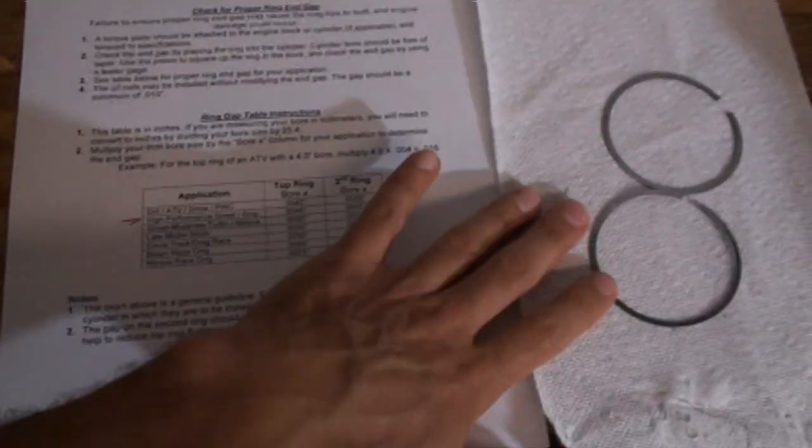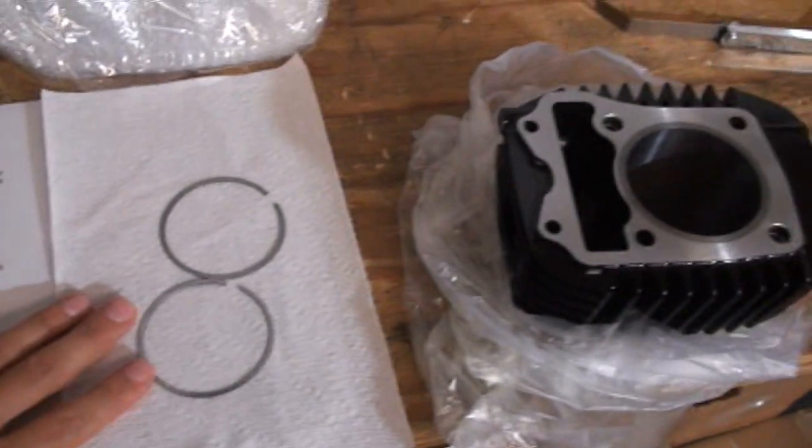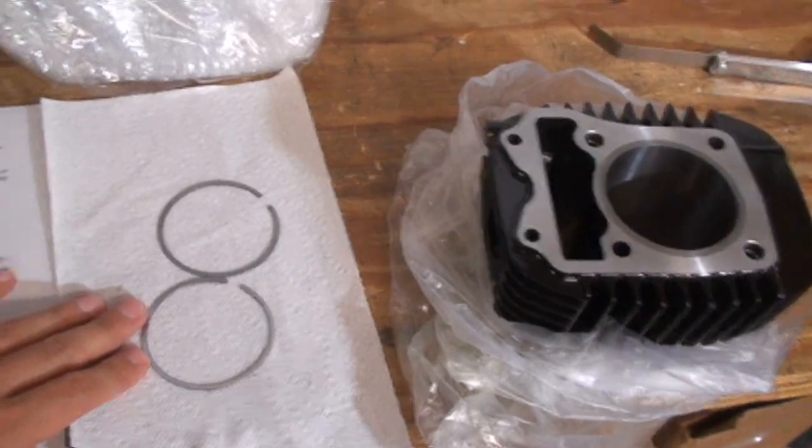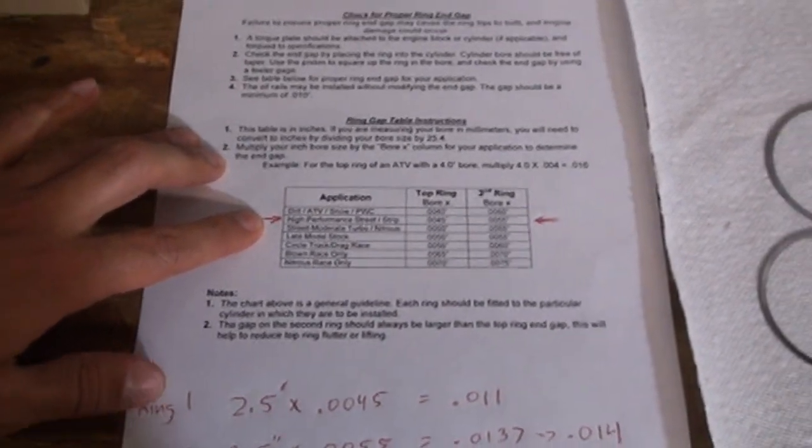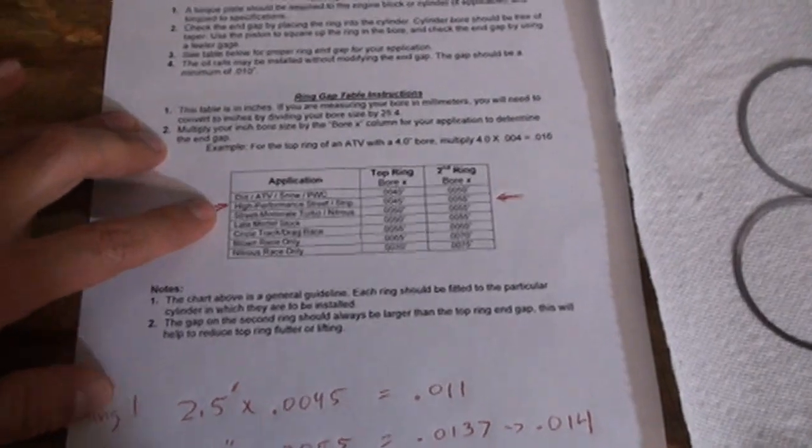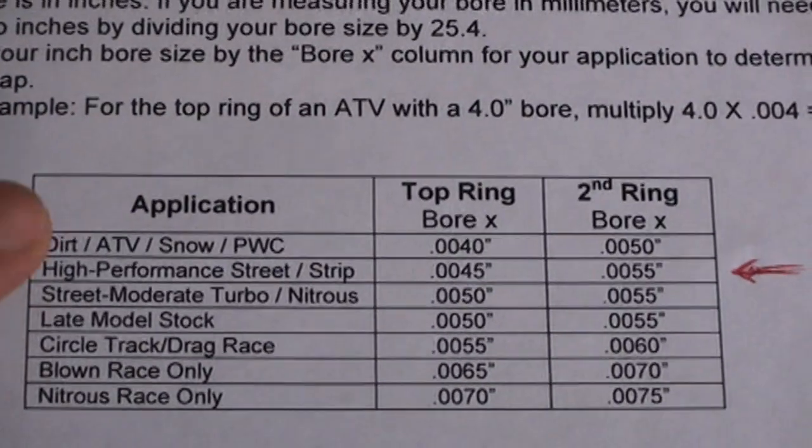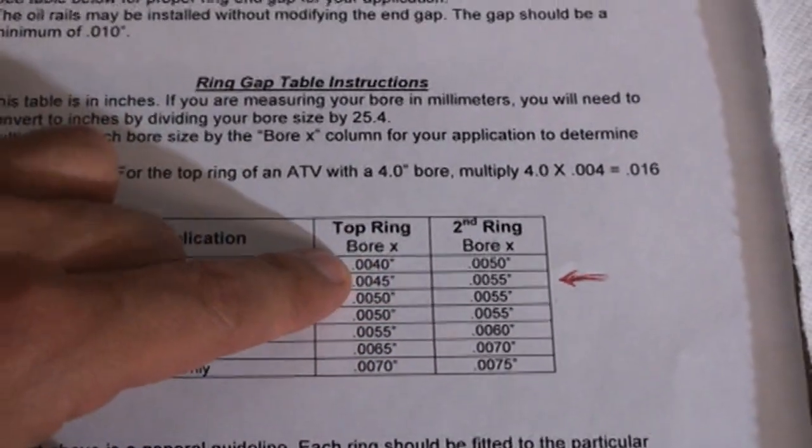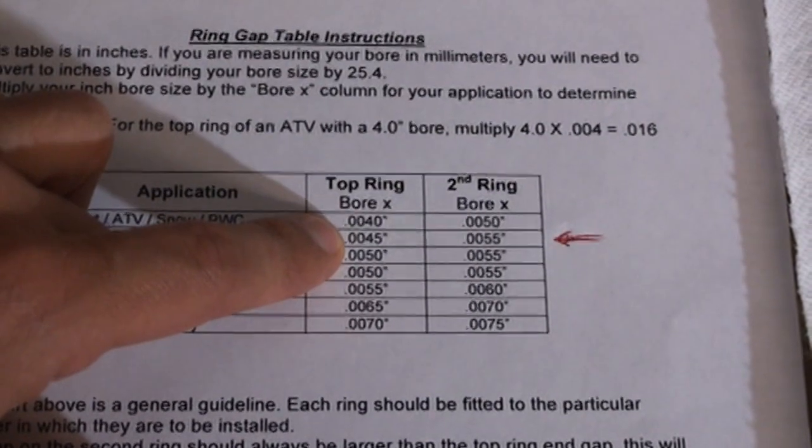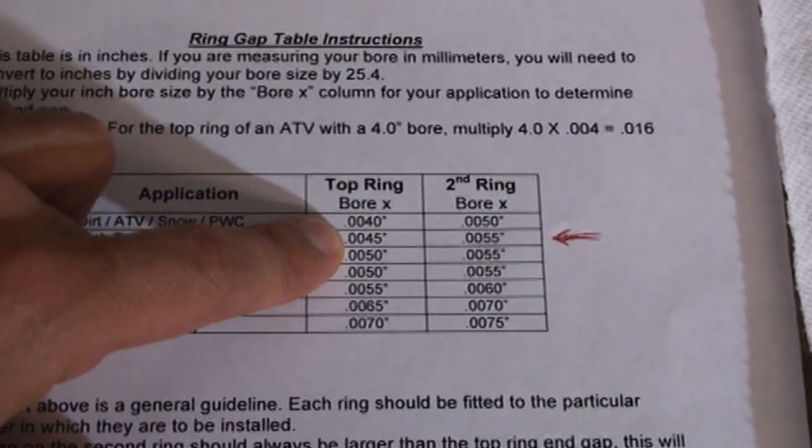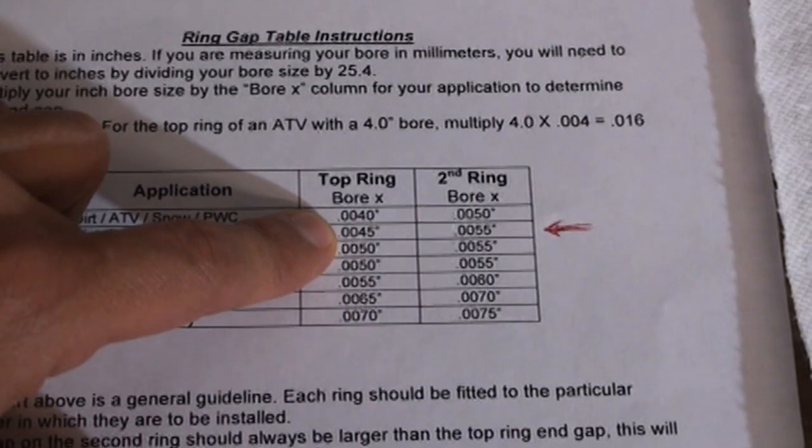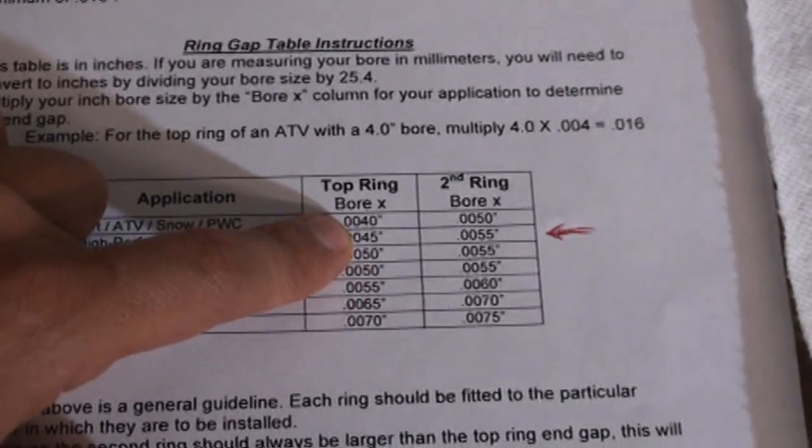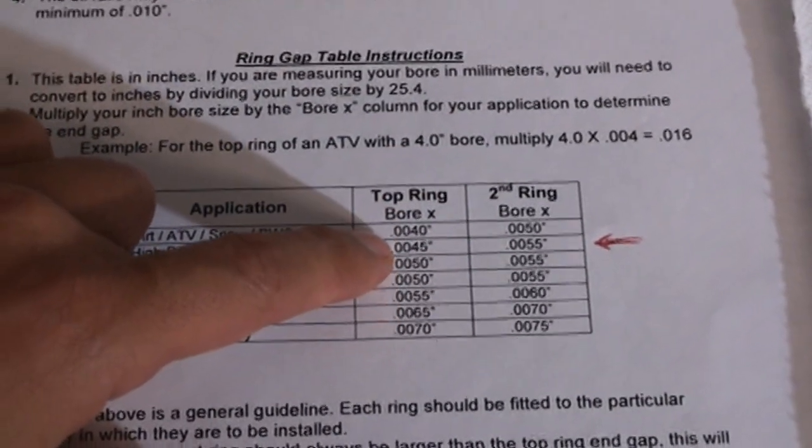So today we're going to be doing a Grom big bore kit with a 2.5 inch bore. It's our 183 finbrow motor. And so we're going to go on this chart here. As you can see, high performance street or drag strip, your top ring is supposed to be .0045 inches per inch of cylinder bore. That doesn't mean .0045 for every cylinder, for every piston, for every ring. That means per inch of cylinder bore.